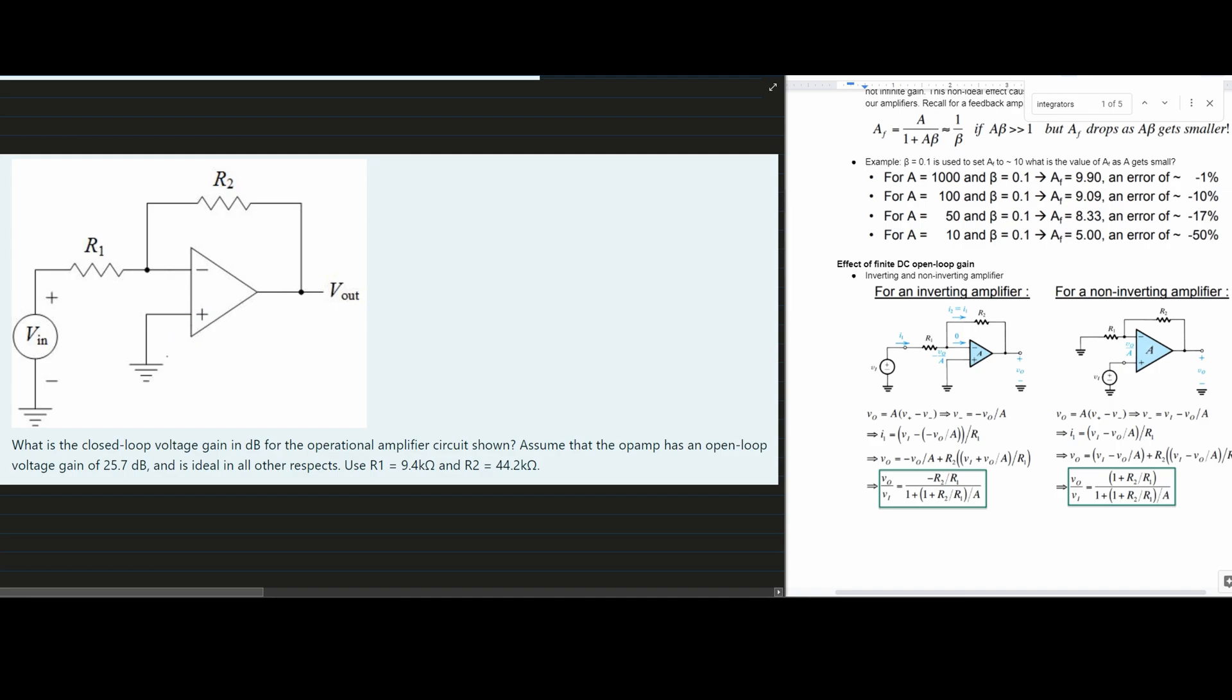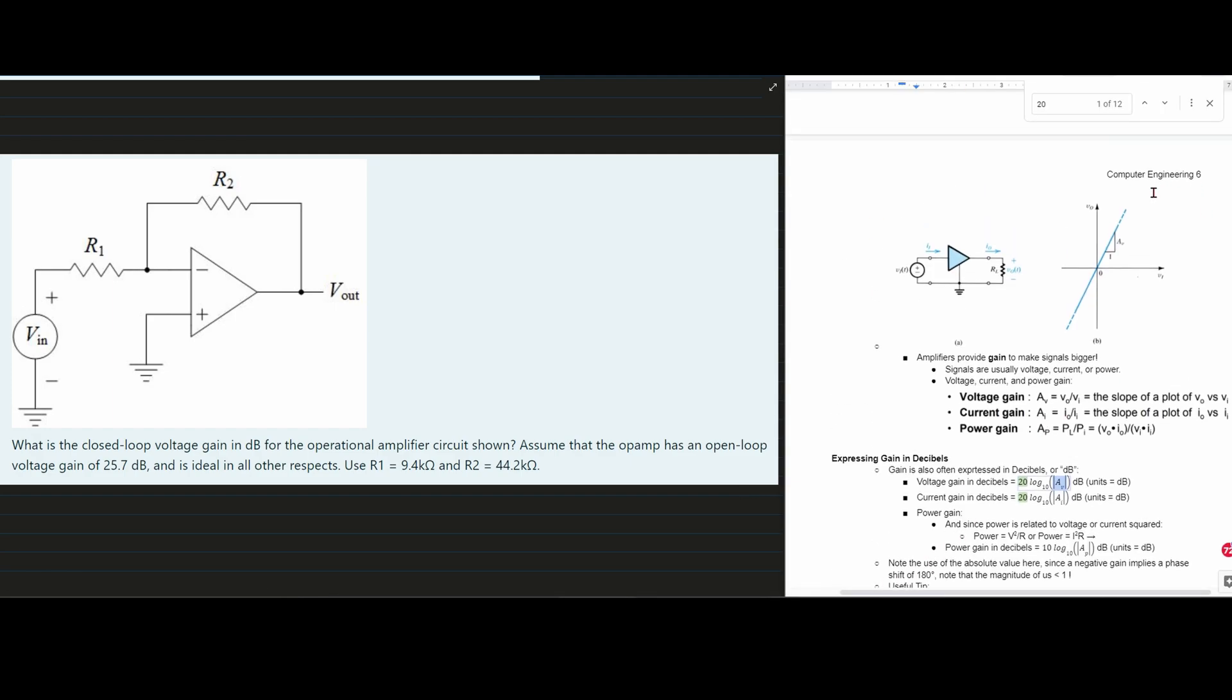And so now that we know that, we can use the equation that we have down here. All we're going to do is plug in our values. We need to find our Vout over Vin. And the reason why we need to find our Vout over our Vin is because if we look at the notes on page 6,